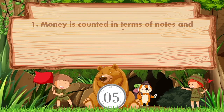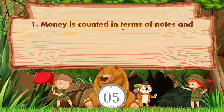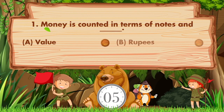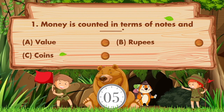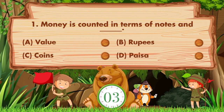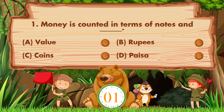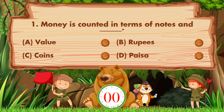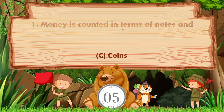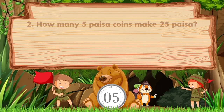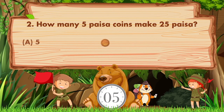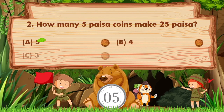Money is counted in terms of notes and blank. Option a is value d rupees, option c is coins. The answer is option c: coins. How many five paisa coins make 25 paisa? Option a is 5, option b is 4.